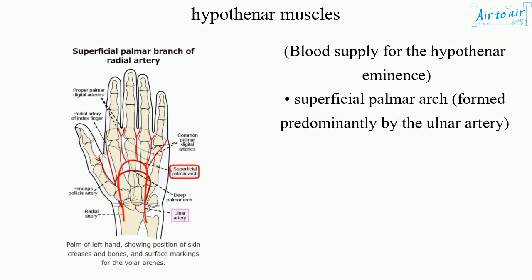Blood supply for the hypothenar eminence comes from the superficial palmar arch, formed predominantly by the ulnar artery.